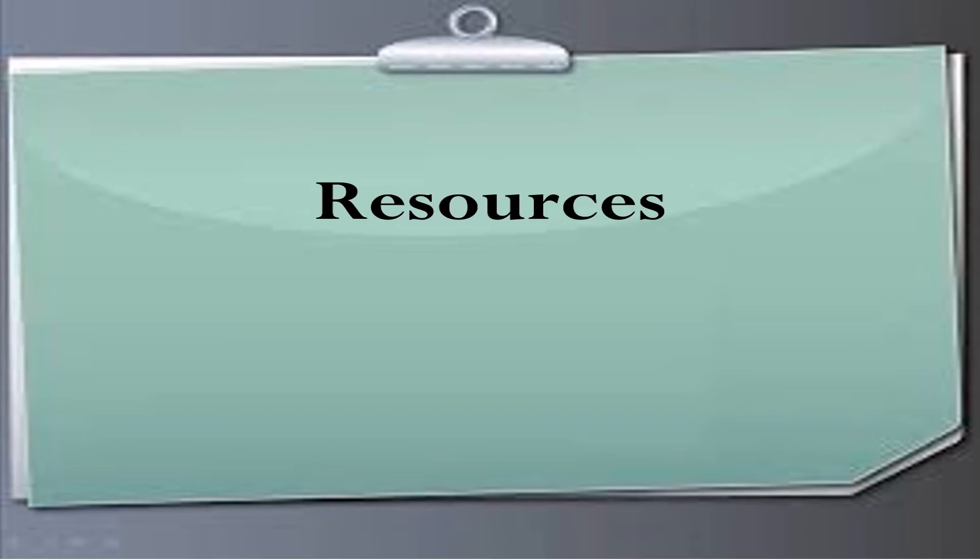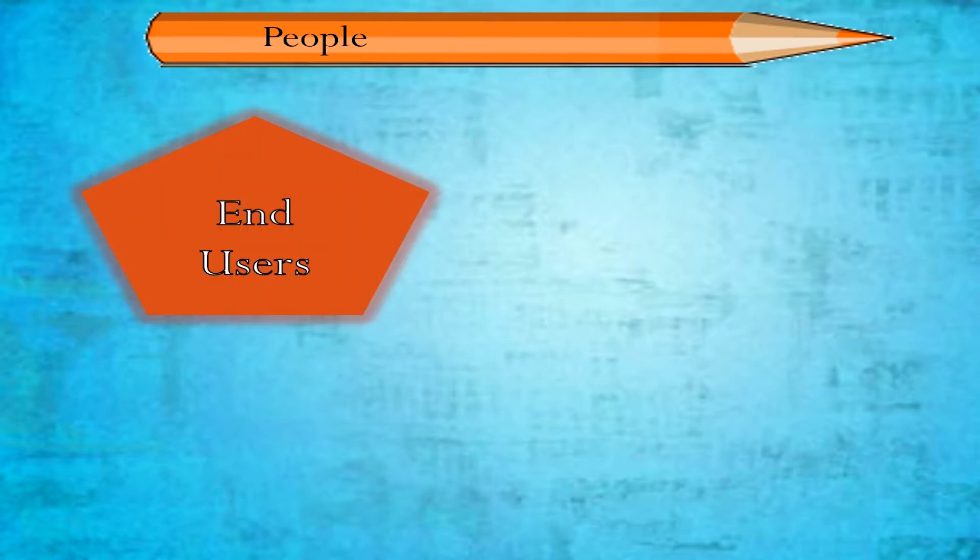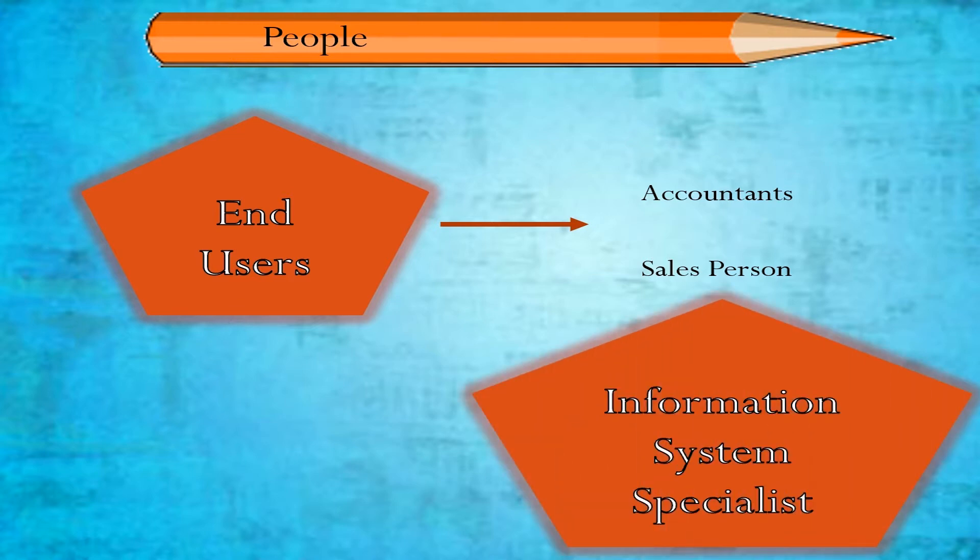Now, what are the resources which are used in information systems? Number one, people resources. These include: one, end users such as accountants, salespeople, customers, and clerks; two, they also include information system specialists such as programmers, system analysts, and computer operators.